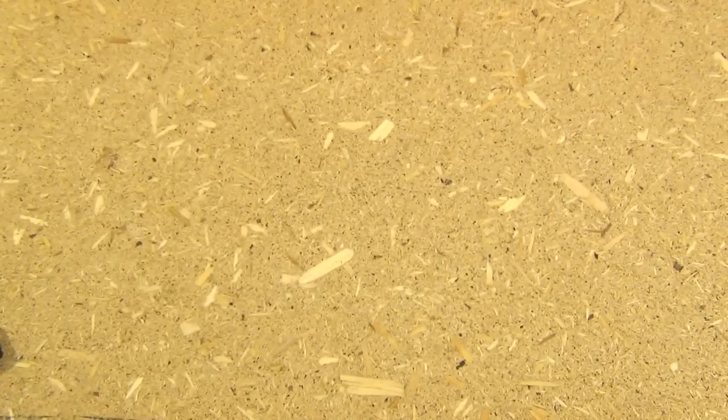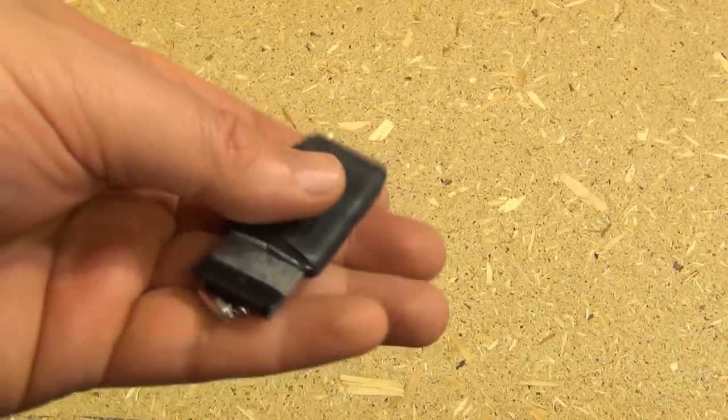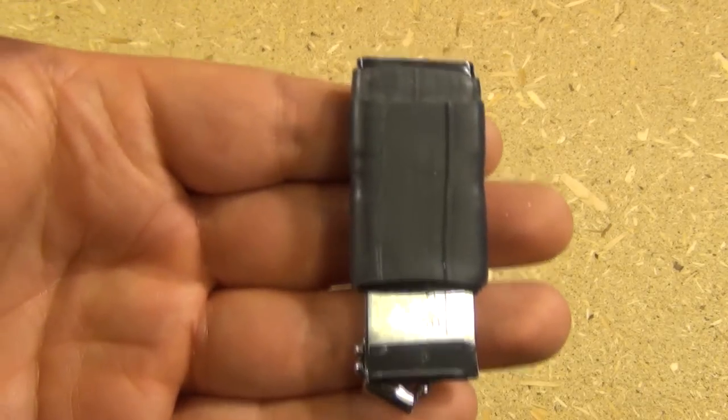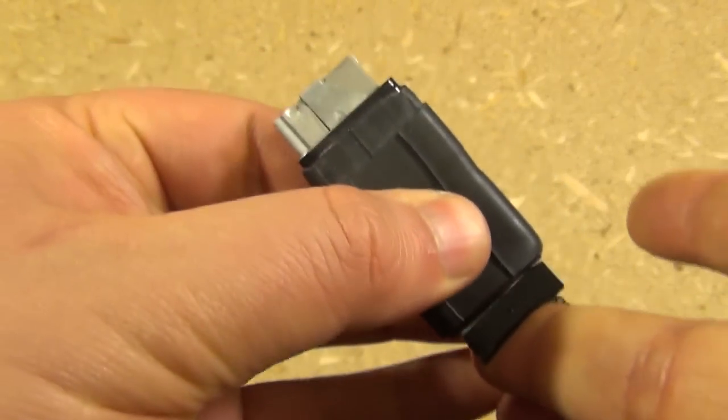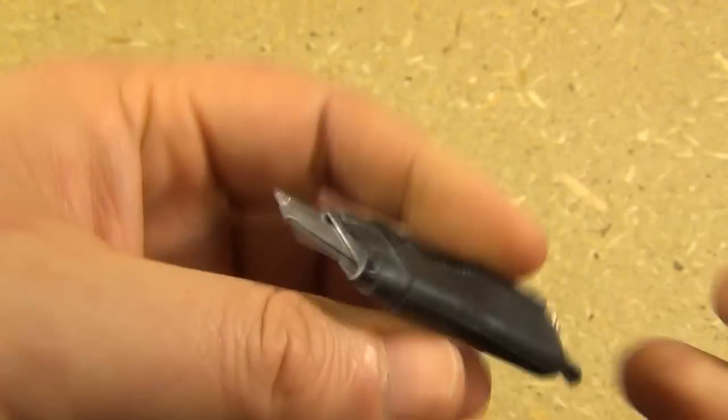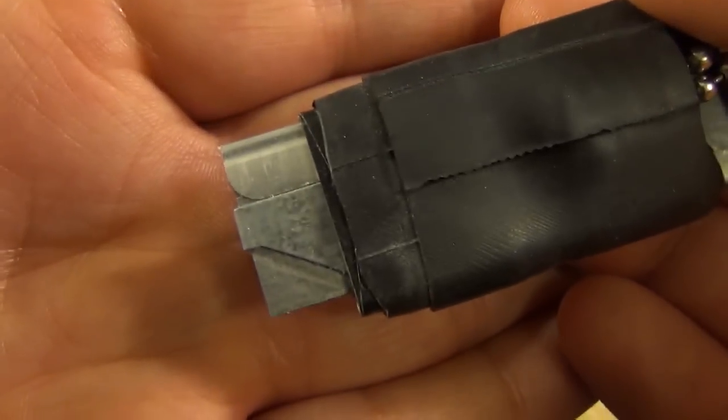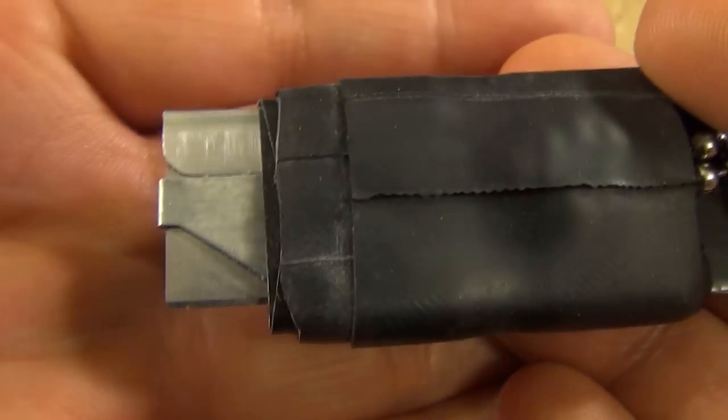The first one is basically a half-sized box cutter. You push on this just like a regular box cutter, and there is your little razor.